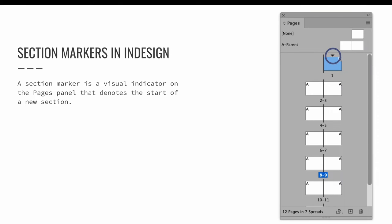Before we add new sections, let's take a look at the pages panel. There is a small triangle above page one — this is a section marker. It is a visual indicator to the InDesign user that a section exists. You will see a new triangle above the page that starts each new section. Remember this, so that if something happens to your numbering or you get confused and have to figure out how to fix an error, you know where to look. When in doubt, get rid of all of your extra sections and just start over.